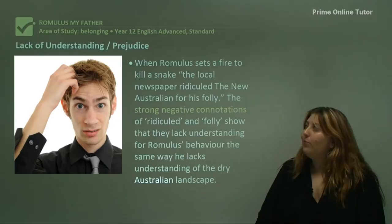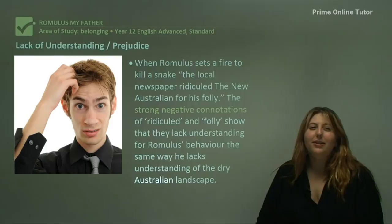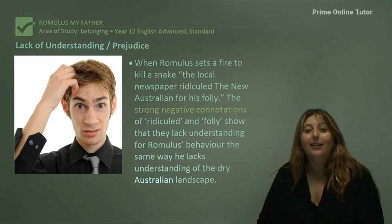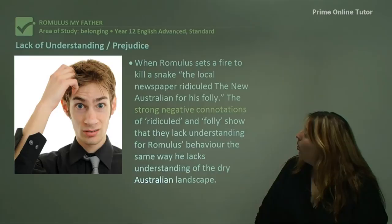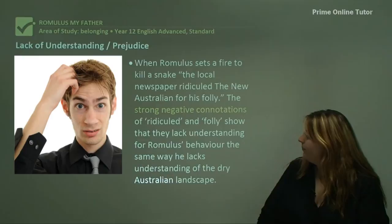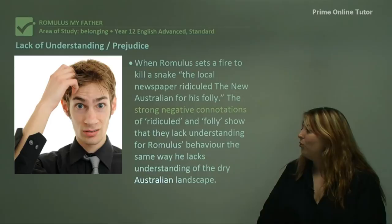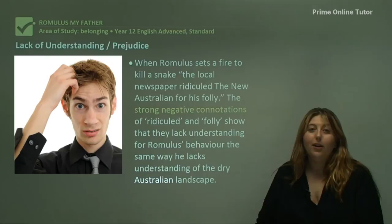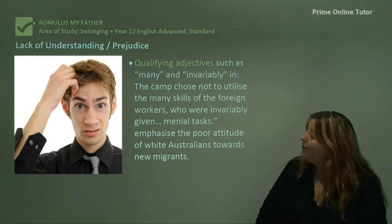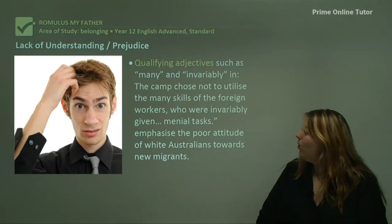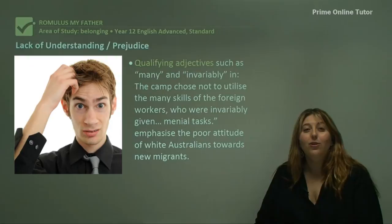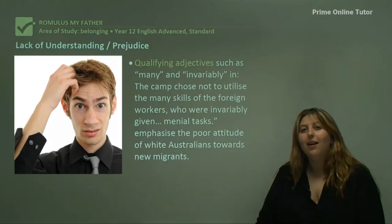Another important idea in this text is understanding and prejudice — the lack of understanding. This is particularly relevant when talking about where migrants and white Australians at that time came into conflict, probably due to the White Australia Policy where migrant Australians weren't really accepted by the general public. When Romulus sets a fire to kill a snake, 'the local newspaper ridiculed the new Australian for his folly.' The strong negative connotations of 'ridiculed' and 'folly' show that they lack understanding for Romulus' behaviour in the same way he lacks understanding for the Australian landscape. Qualifying adjectives such as 'many' and 'invariably' in — 'the camp chose not to utilise the many skills of the foreign workers who were invariably given menial tasks' — emphasise the poor attitude of white Australians towards new migrants, treating them like second-class citizens even when they came with many skills.